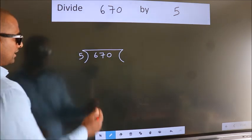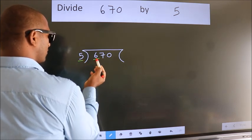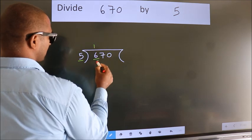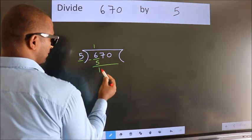Next. Here we have 6, here 5. A number close to 6 in 5 table is 5 once 5. Now we should subtract. We get 1.